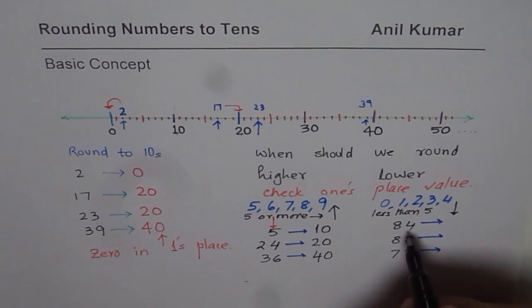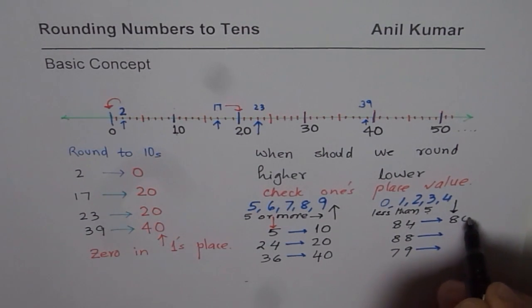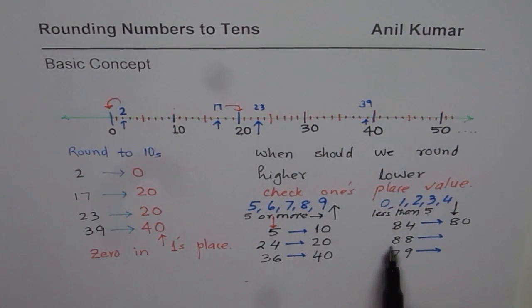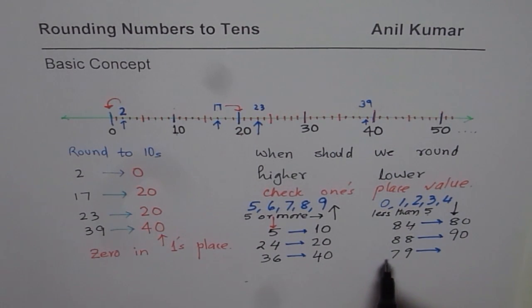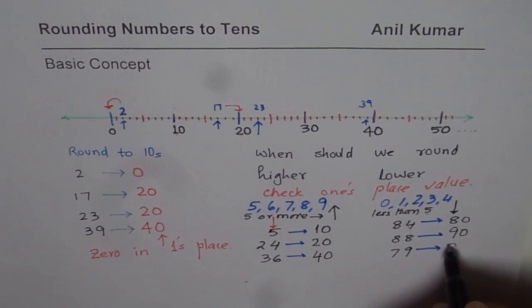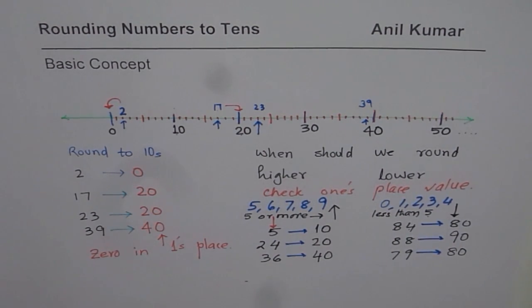84. 4 is less than 5. So it rounds lower. Lower means 80. 84 is between 80 and 90. 88 is also between 80 and 90. But because 8 is 5 or more, it is rounded higher. So it rounds to 90. 79 is between 70 and 80. 9 is higher than 5, 5 or more. So it rounds to 80. So that is also a rule which helps you to round numbers.